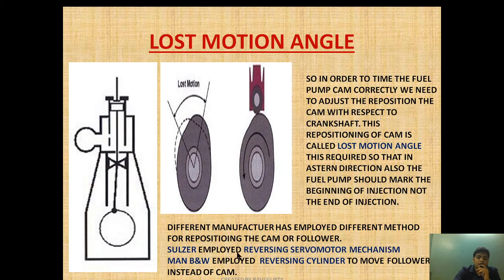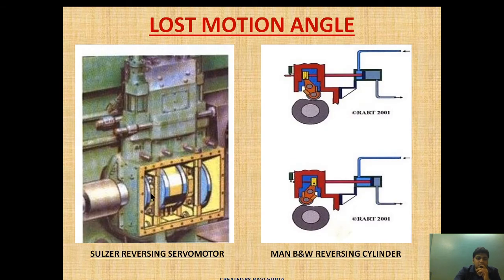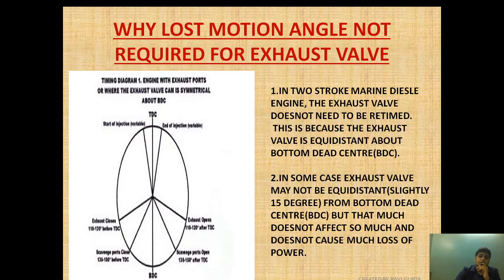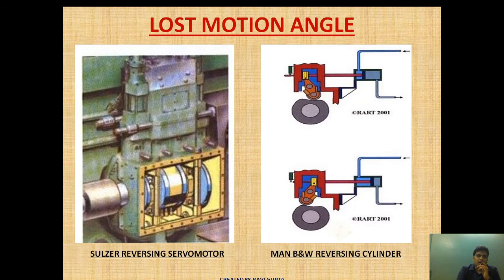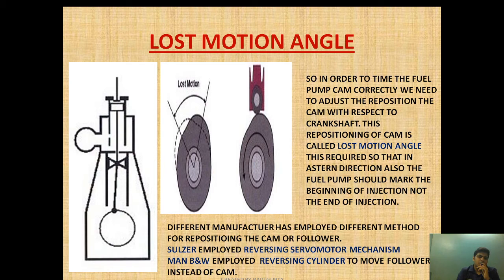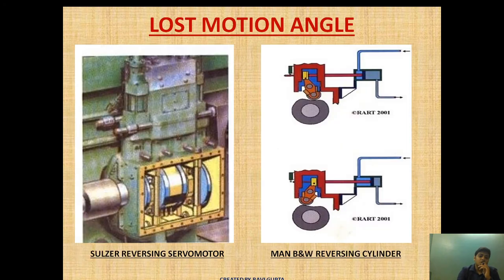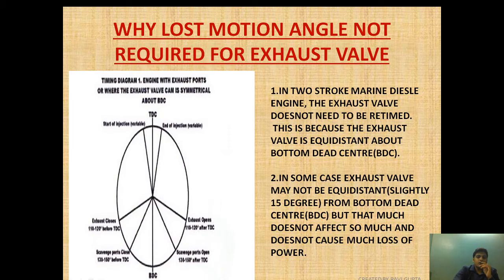Lost motion angle is employed by different manufacturers using different methods. Sulzer employs a reversing servo motor mechanism, and MAN B&W employs a reversing cylinder mechanism. In Sulzer, the whole cam is moved, while in MAN B&W the follower is moved. More detail on the reversing servo motor arrangement and reversing cylinder arrangement will be explained in a later video. The second question is: if lost motion adjustment is needed, why are we adjusting only the fuel pump cam and not the exhaust valve position?